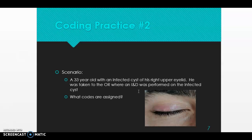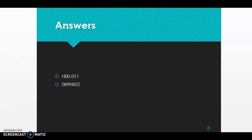In the second row: character 5 is '0' for open, character 6 is 'Z' for no device. Now we pick character 7 — the qualifier — which is either 'X' for diagnostic or 'Z' for no qualifier. Diagnostic means tissue was removed and sent to pathology; that did not happen in our scenario. So our qualifier is 'Z' — no qualifier. Our two final codes are H00.011 for the diagnosis of the infected cyst (hordeolum), and 089INOZZ for the incision and drainage procedure.